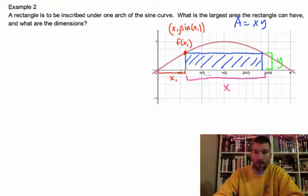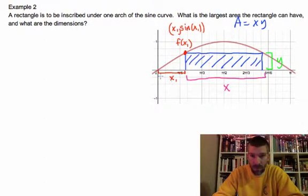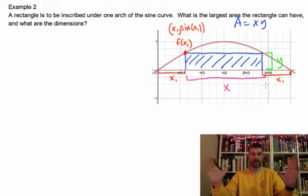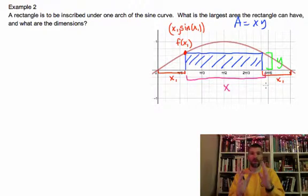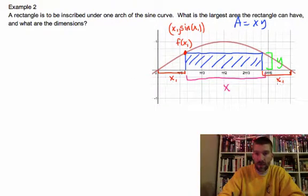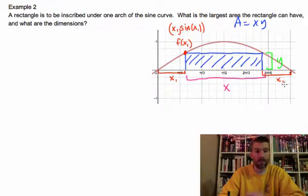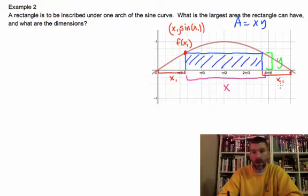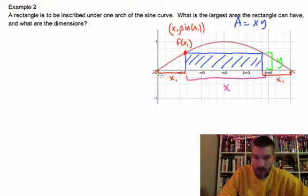Notice that whatever value this is right here, I'm going to match it on this end as well. It's going to be the exact same because I'm going to move in the same number of units from both sides of the end of my sine curve to create my rectangle. So my rectangle is going to be centered inside that arch, under that arch. This distance right here is going to be the same distance no matter what.